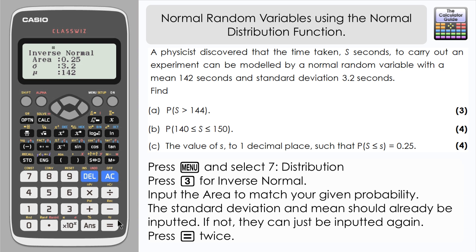We've got everything in there. Press equals and equals just to confirm. Then we have our value here in seconds that would give a correct area of 0.25. The question asks for the value of s to one decimal place, so in this case it's 139.8.